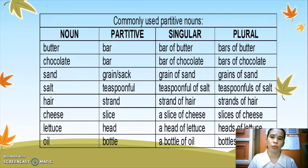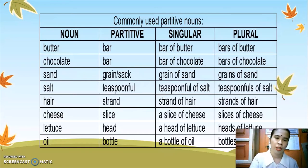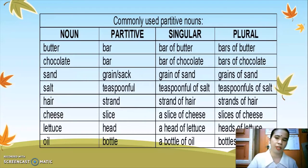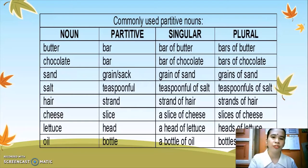The same goes for the other words. For sand, the partitive is grain or sack. To make it singular: 'a grain of sand' or 'a sack of sand.' To make it plural: 'grains of sand' or 'sacks of sand.' For salt, the partitive is spoonful. The singular form is 'a spoonful of salt' and the plural is 'spoonfuls of salt.'